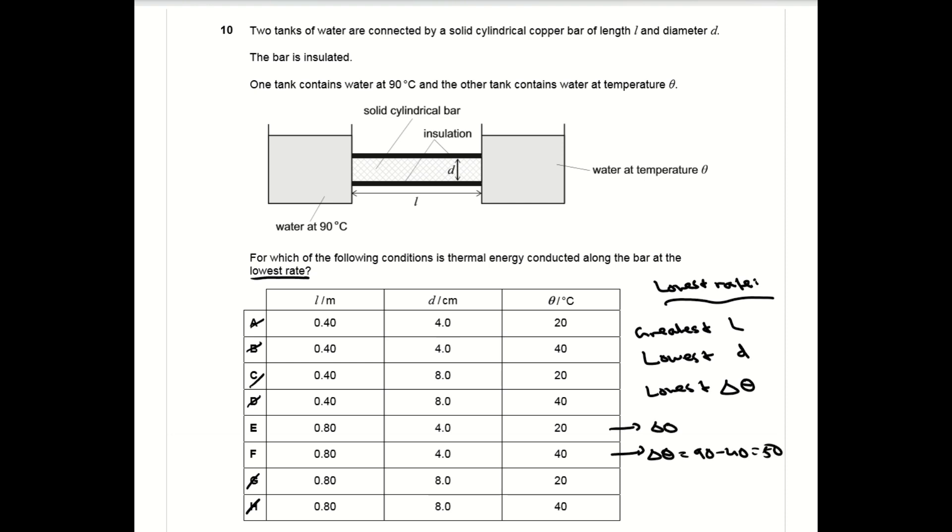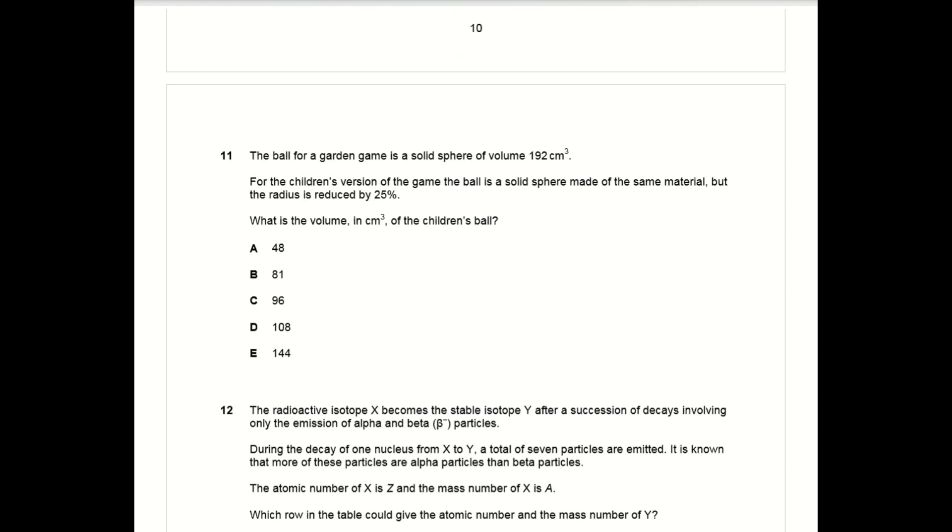The volume of a sphere is four over three pi r cubed. If the radius is reduced by 25 percent, so the radius becomes three quarters of its original value, the volume would be three quarters cubed of its original value, so it'd be 27 over 64 of its original value. When you multiply that by its current volume of 192 centimeters cubed, you get a new volume of 81, which is B.